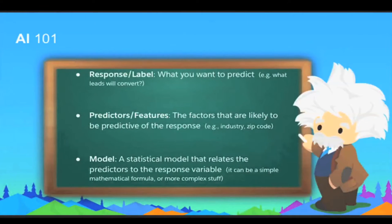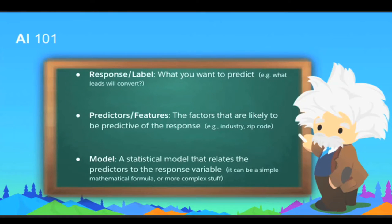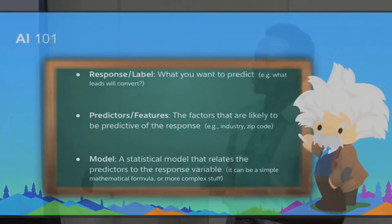So first, AI 101. In data science there are three key things. The first is what are called responses — a response, prediction, or label is something you want to predict. For example, a text classification problem where you want to predict the next text, or a sales object where you want to predict the likelihood of a person converting into a lead.